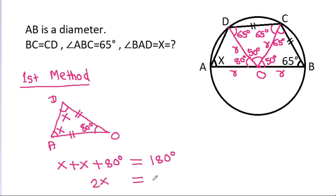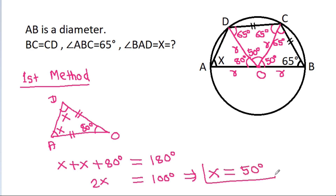So X is equal to 50 degrees. This completes the first method, confirming X equals 50 degrees.